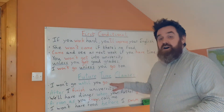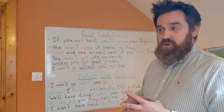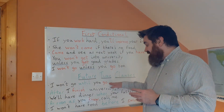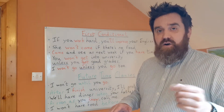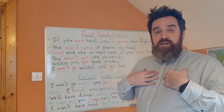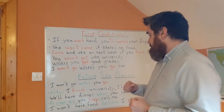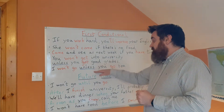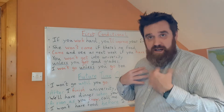'I won't go until you go.' In this example, I know you are going. I know. But I want you to go first and I will go second. Compare this to 'I won't go unless you go too' — in that example, I don't know if you will go.